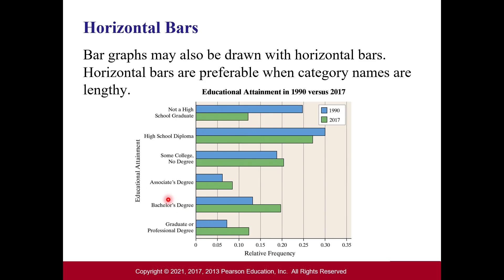Here's another way to look at this using horizontal bars — same information, but horizontal bars are especially useful when your category names are long, since you can fit longer names on the vertical axis rather than squeezing them along the bottom.